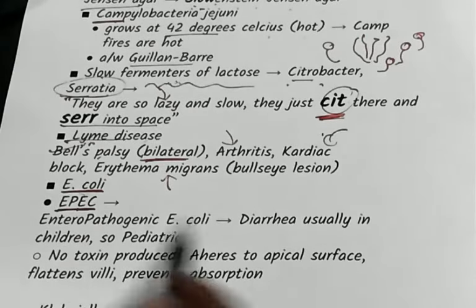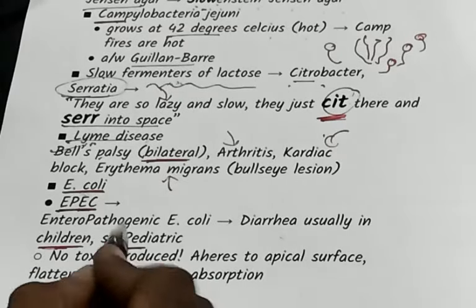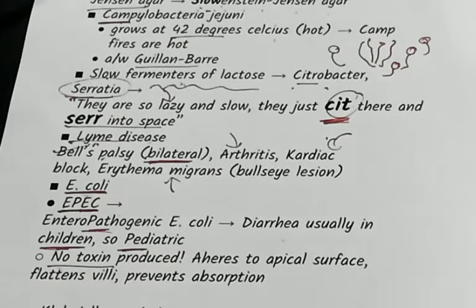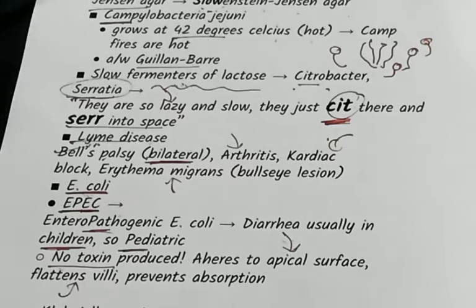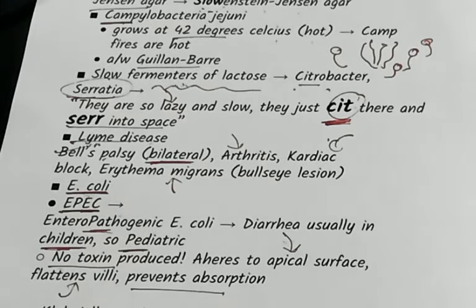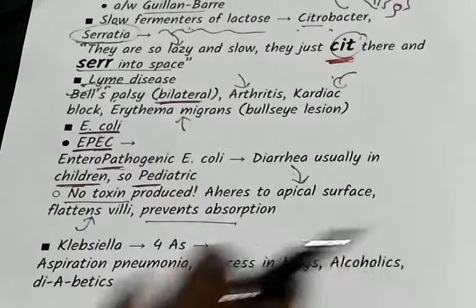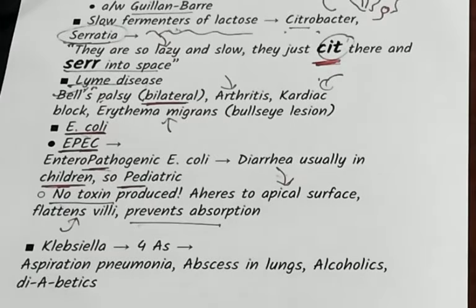Enteropathogenic E. coli typically leads to diarrhea in children — P for pediatric, P for enteropathogenic. It is not invasive; no toxin is produced. It adheres to the apical surface, flattens the villi, and prevents absorption — that is enteropathogenic E. coli.